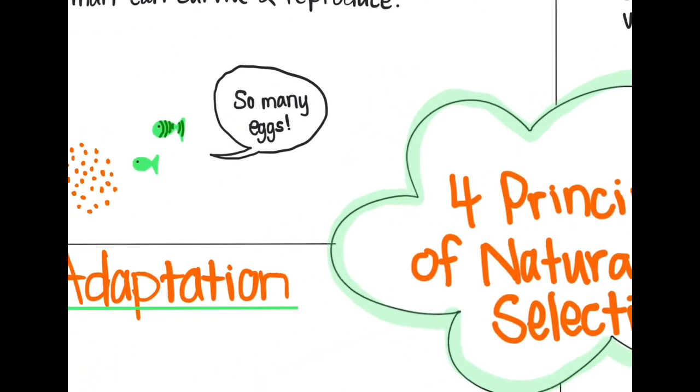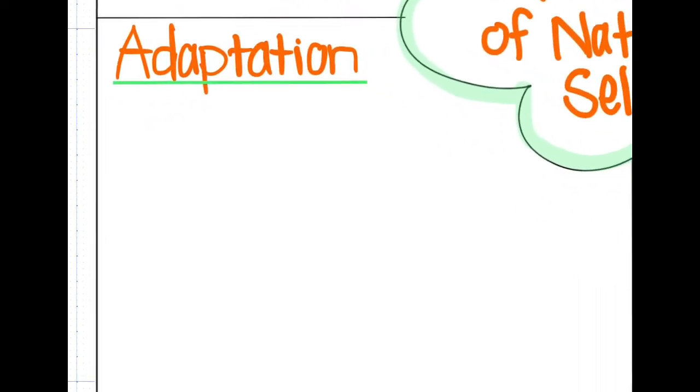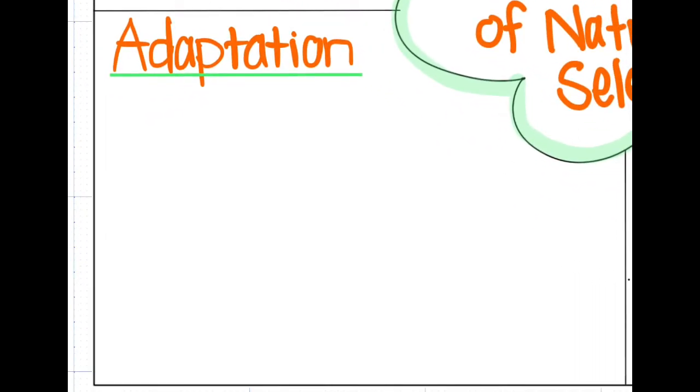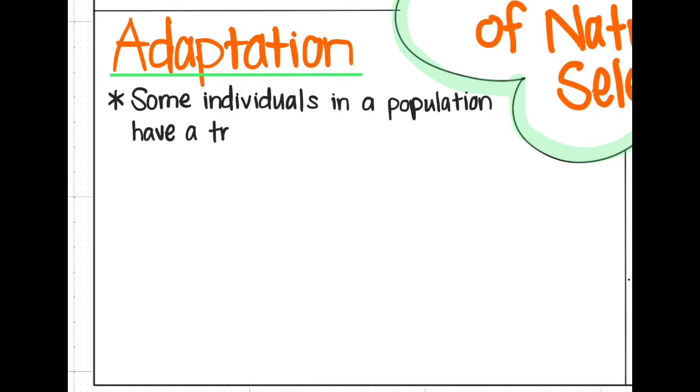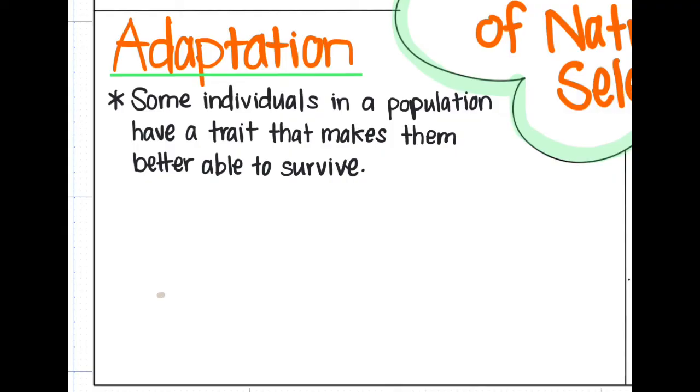And on to our next principle of natural selection: adaptation. Adaptation is the concept that some individuals in a population have a trait that makes them better able to survive. Now first, let's address that the word adaptation can be confusing. In everyday life, we use the word adapt to mean change, but in science, an adaptation is something that an organism is born with that helps it to survive.